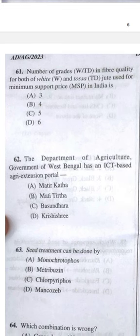Question 61: The number of grades in fiber quality for both white jute and tosa jute used for minimum support price in India — answer D, six grades.